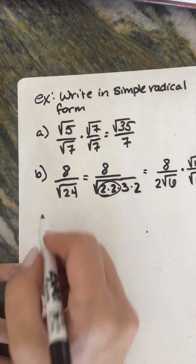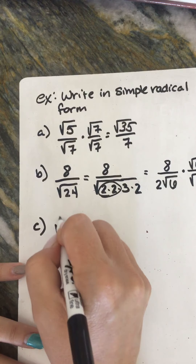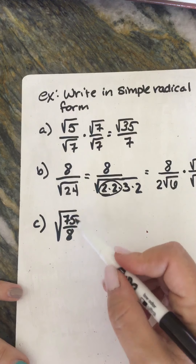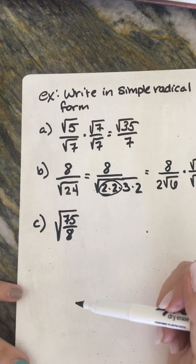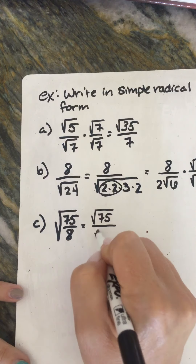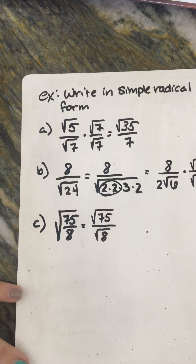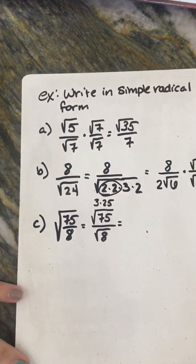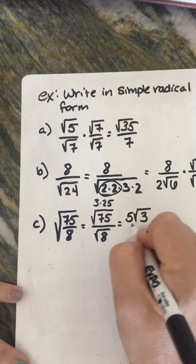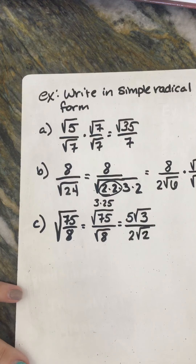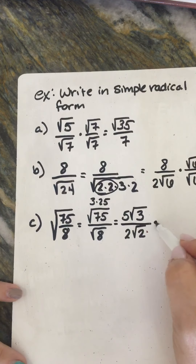Example C: Write in simplest radical form — square root of 75 over 8. Before you go crazy, does 8 go into 75 evenly? It does not. So let's rewrite it as square root of 75 over square root of 8. Now simplify everything: 75 is 3 times 25, so this becomes 5 square root of 3. Square root of 8 simplifies to 2 square root of 2. Are we in simplest radical form? Nope — we've got a radical in the denominator.